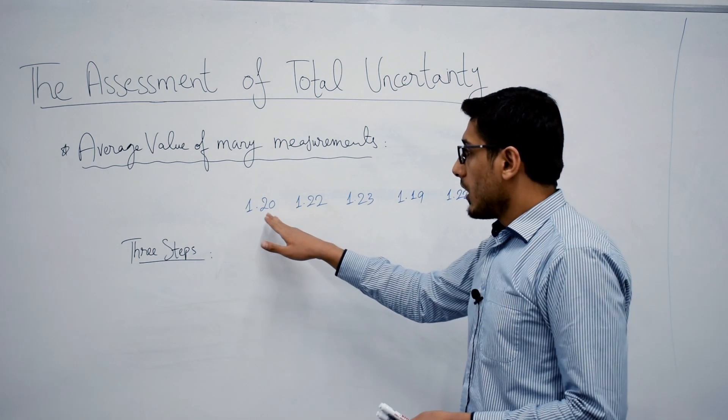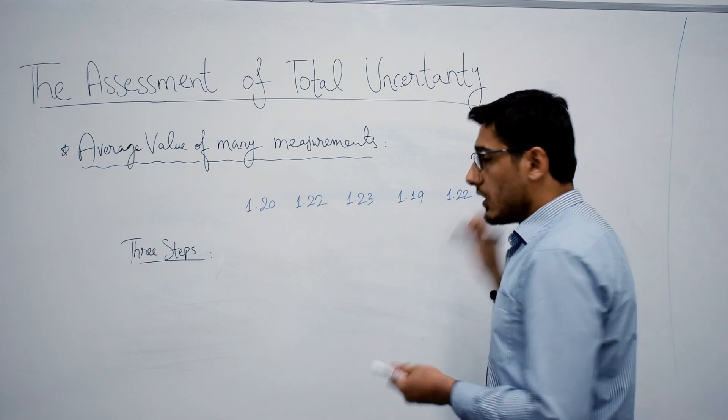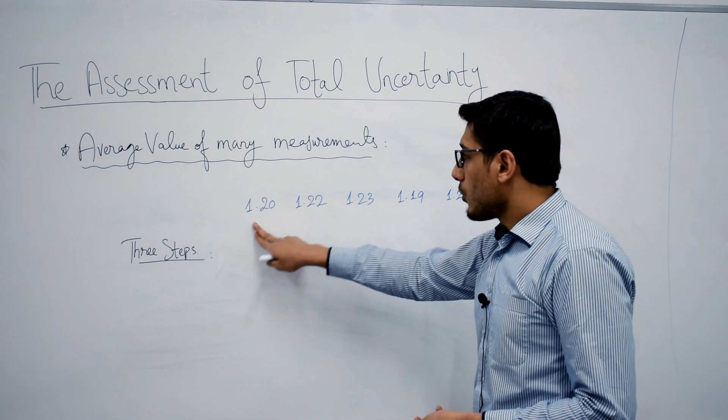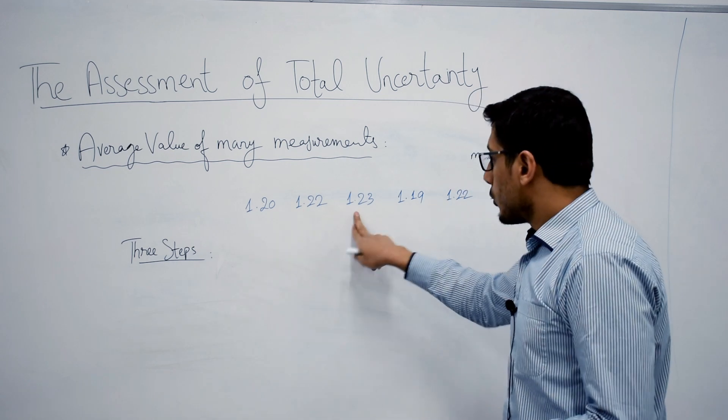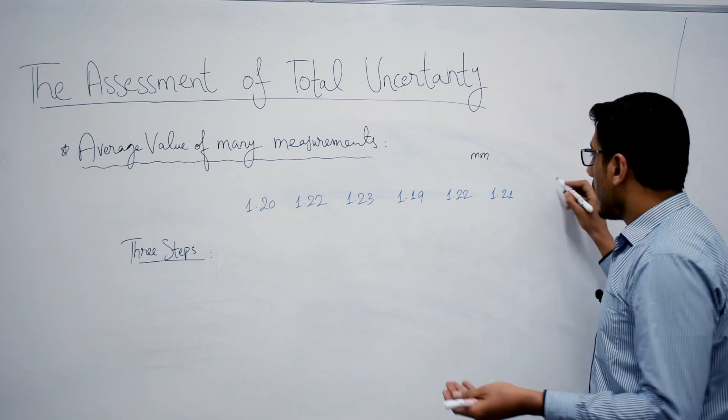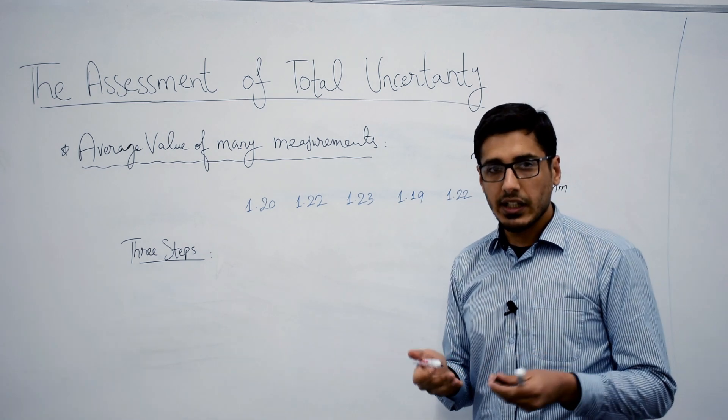All these measurements are in millimeters, since screw gauge measures in millimeters. Let's say your measurements are 1.20, 1.22, 1.23, 1.19, 1.22, and 1.21 millimeters - all are in millimeters, the measurements, the readings that you have taken.